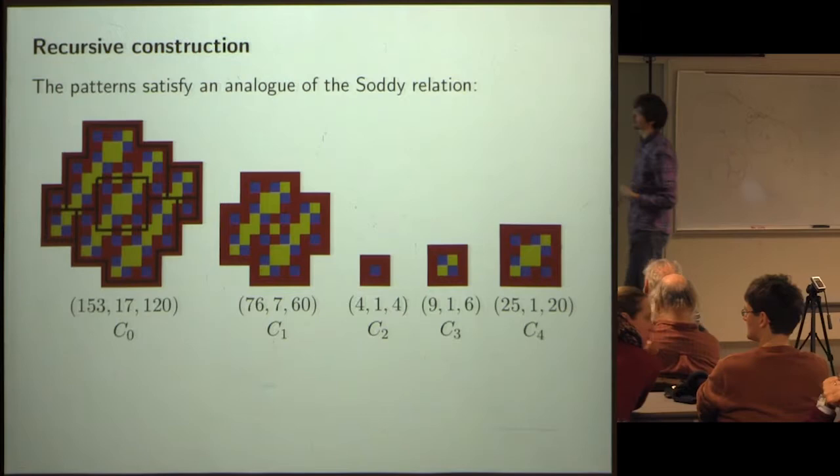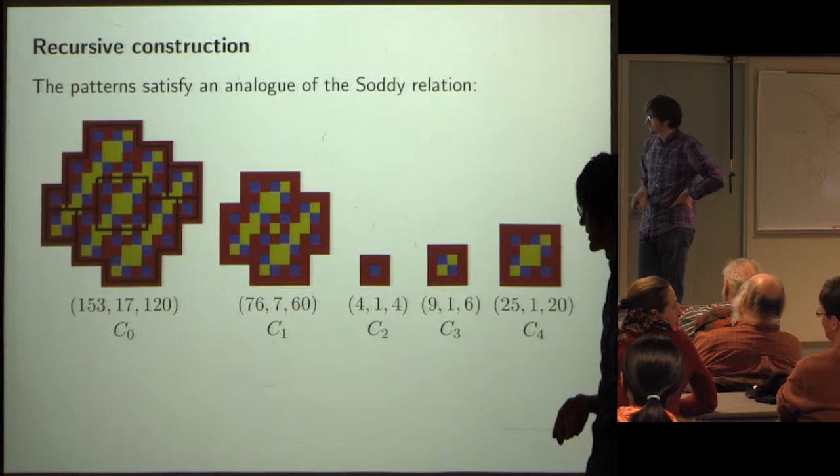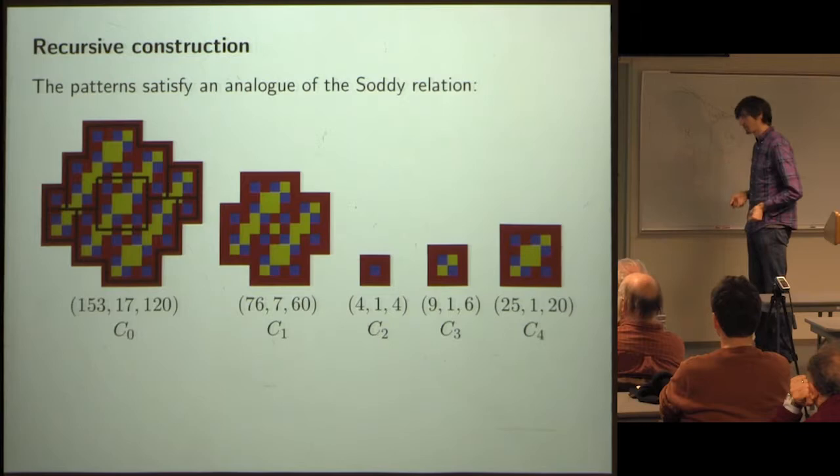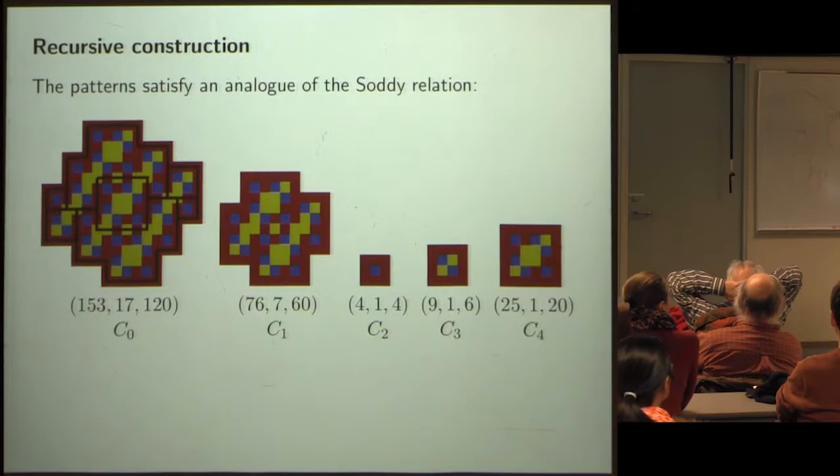This observation — made empirically — is basically the key to the whole induction proof. Once you make this observation, you spend a few months mired in technical details getting the induction hypothesis right, but that's the main idea.